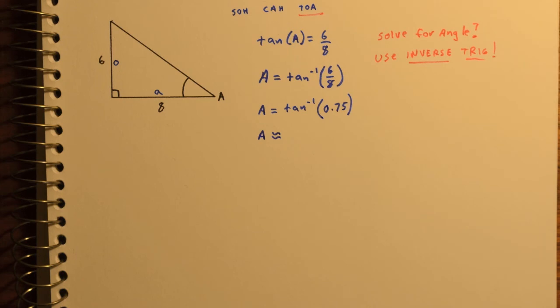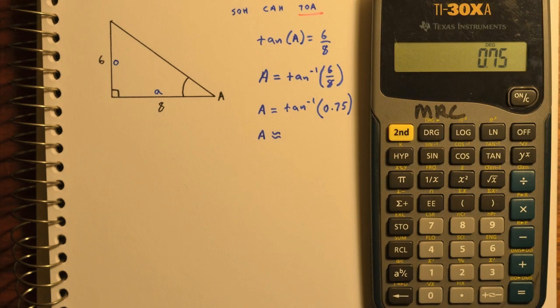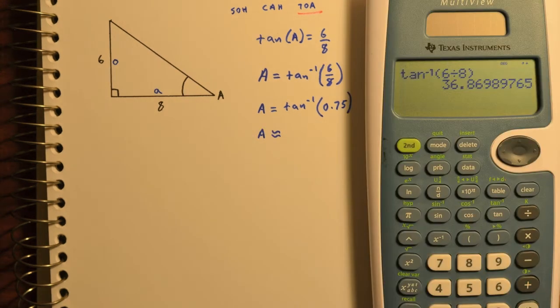Regardless, when using your calculator, inverse tangent of, let's say, .75 is 36.87. Likewise, you could just use six over eight, so we get 36.87 degrees.